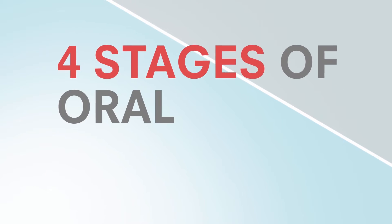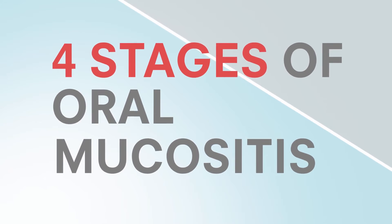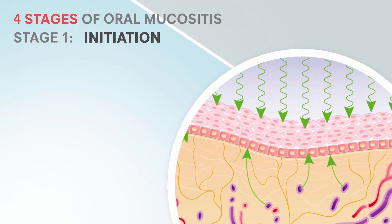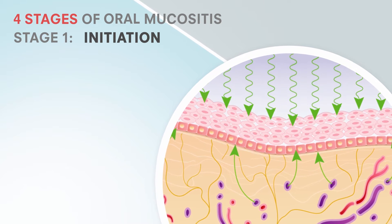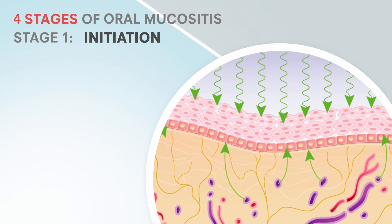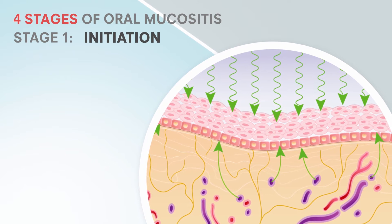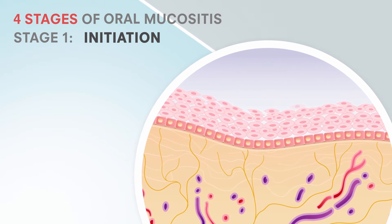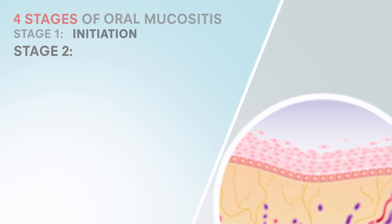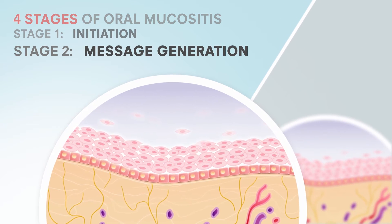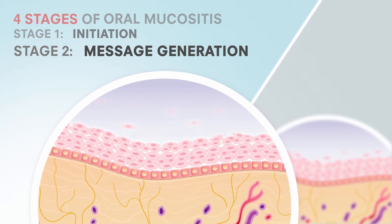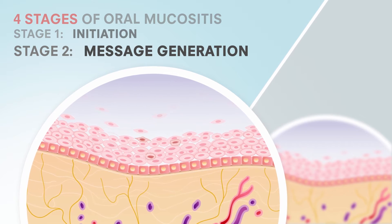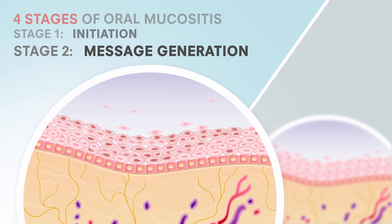There are four stages in the development of oral mucositis. The first is called the initiation stage, where radiation or chemotherapy causes direct injury to the DNA in cells in the mucosa and submucosa, resulting in epithelial cell death. The second stage is known as message generation, where there is activation of enzymes that cause inflammation and also destroys submucosal cells and fibroblasts.